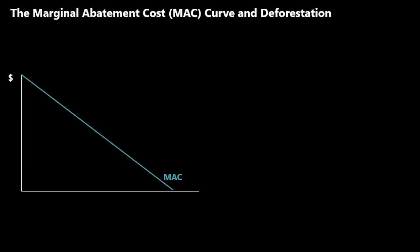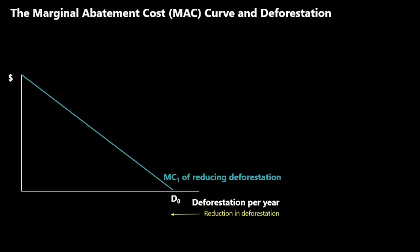This video covers how we can use the marginal abatement cost curve and the analysis from previous videos to understand how landholders make deforestation decisions. We have the marginal abatement cost curve — it's downward sloping. On the axis, we now have deforestation instead of emissions, meaning deforestation increases along the x-axis and reduction in deforestation decreases along that axis. The marginal abatement cost also represents the marginal cost of reducing deforestation.